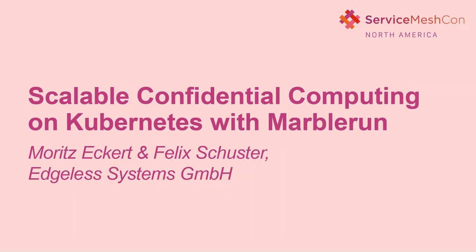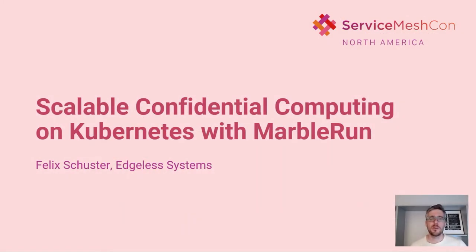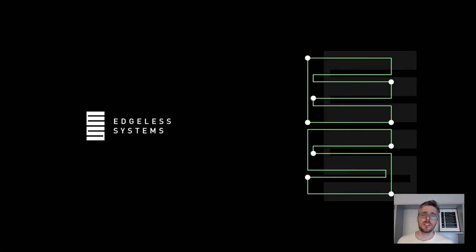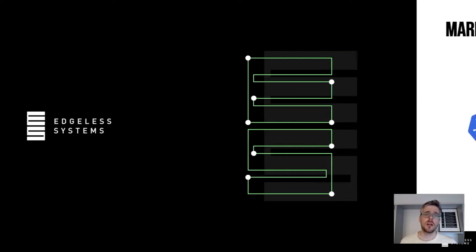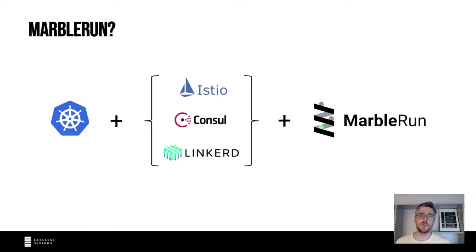Hi everyone, welcome to my talk. My name is Felix Schuster and today I'm going to talk about scalable confidential computing on Kubernetes with MarbleRun. A few words about myself: I'm the CEO and co-founder of Edgeless Systems, a startup building open source software for confidential computing. One of the tools we built is MarbleRun, which is an extension to your existing service mesh that makes your deployment a confidential deployment.